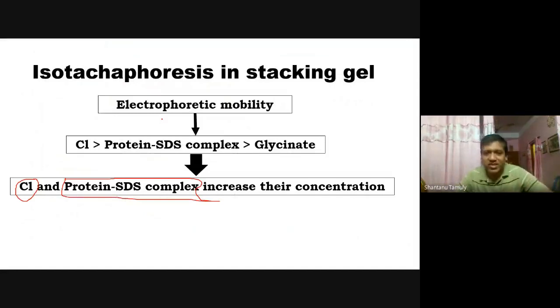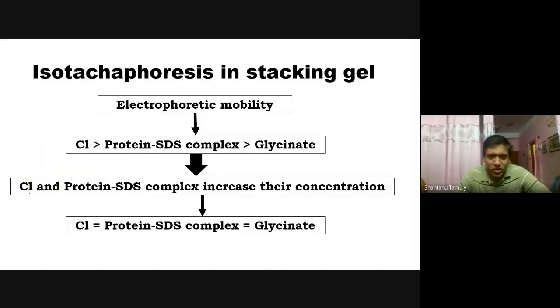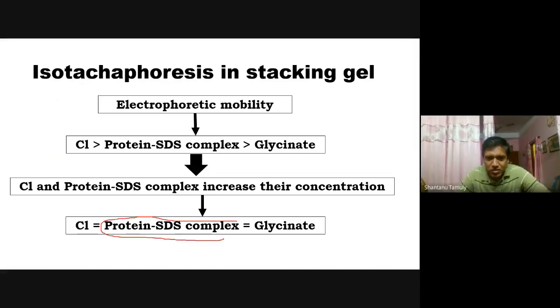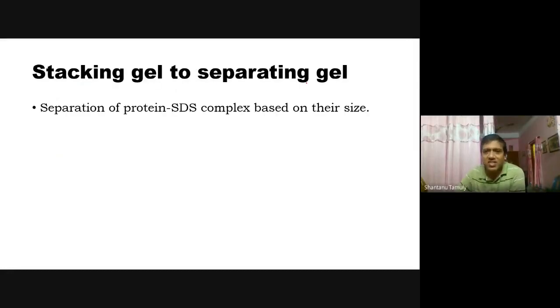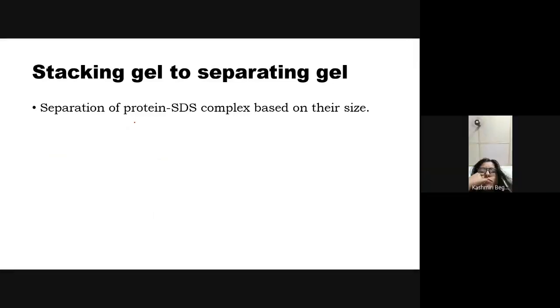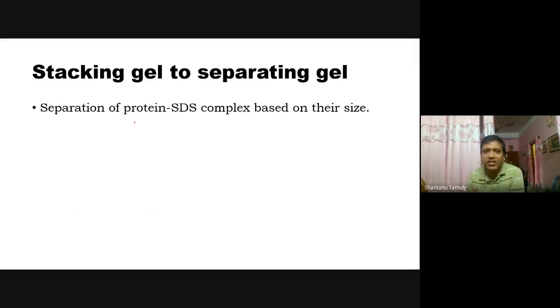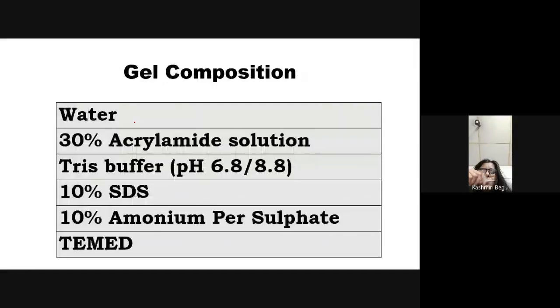This is how stacking occurs. The chloride ions and protein-SDS complex increase their concentration, reducing their electrophoretic mobility to match the glycinate. After stacking in the stacking gel, the protein-SDS complex enters the separating gel, where the pore size is smaller. In the separating gel, movement of the protein will be based on their size.